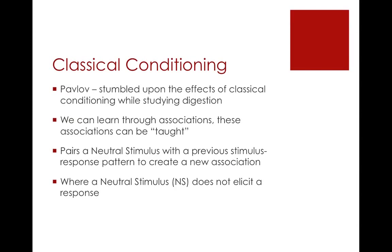Classical conditioning was further explored by Pavlov, who stumbled upon its effects while studying digestion. He was looking at the production of saliva as the first step in digestion. He found that dogs would start to salivate before they received food, notably when the lab assistants were making noise preparing the food. Pavlov decided to test this by introducing his own experiment using a bell to produce saliva. We can learn through associations, and these associations can be taught.